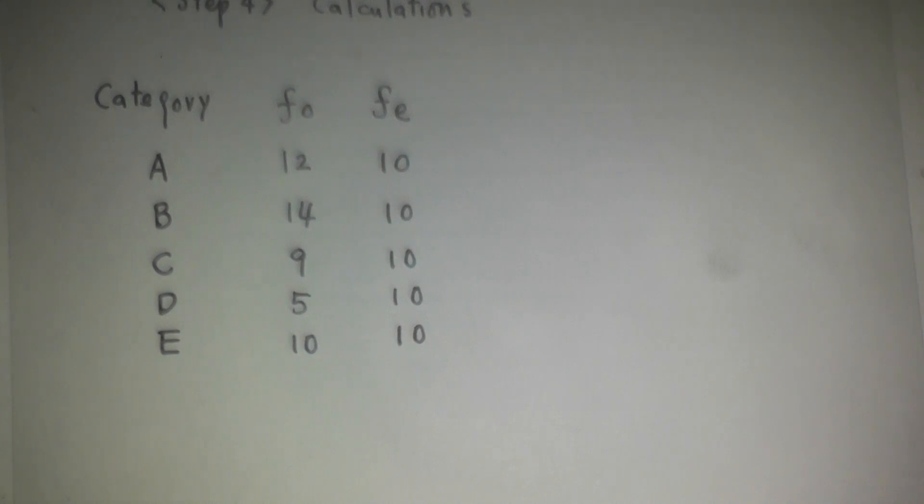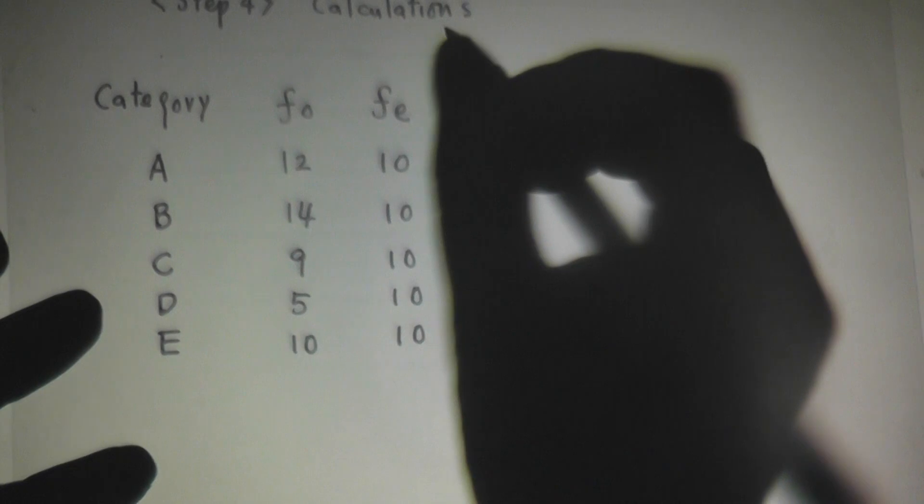Under H0, if the instructor has no particular preference over A, B, C, D, E, then A, B, C, D, E should all be equally likely to be the correct answer. So they are all equal to 10.